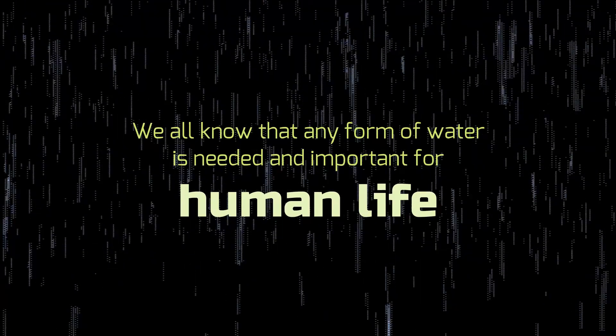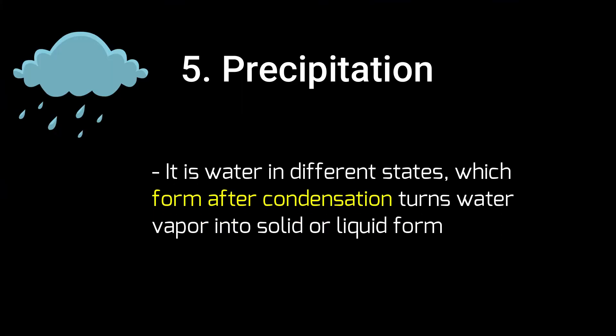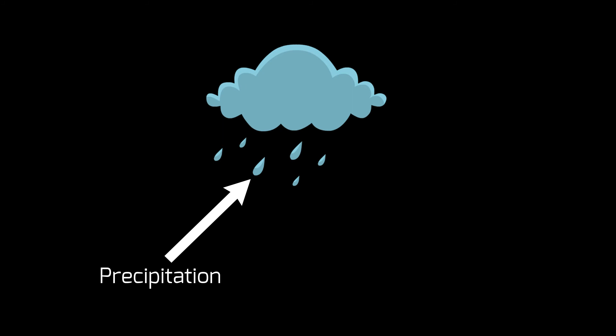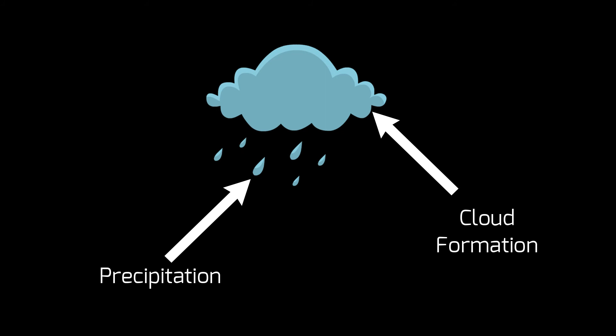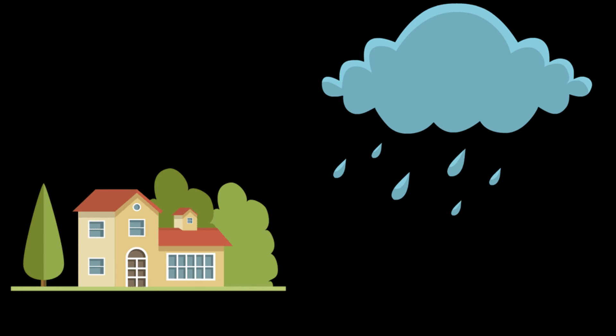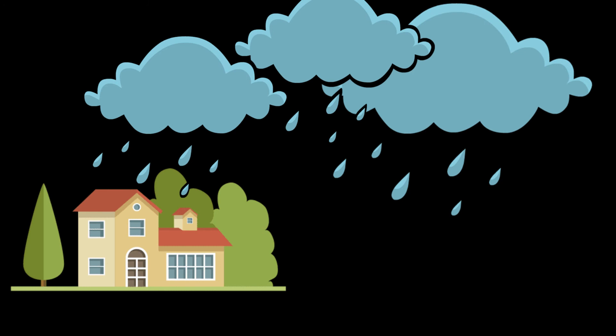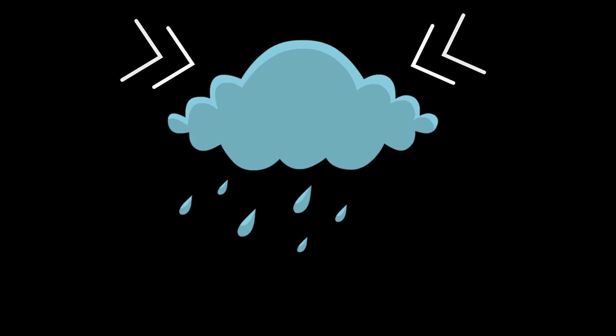We all know that any form of water is needed and important for human life. Precipitation is water in different states which forms after condensation turns water vapor into solid or liquid form, and falls to the ground once it becomes too heavy to stay in the air. It is primarily the result of evaporation and condensation. Precipitation is simply any water form that falls to the earth from cloud formations. As an element of weather and climate, precipitation can determine if outdoor activities are suitable, and it is a long-term, predictable factor of a region's make-up. Precipitation is the product of a rapid condensation process; if the process is slow, it will only produce cloudy skies. Precipitation could take on the form of drizzle, mist, rain, hail, graupel, or snow.